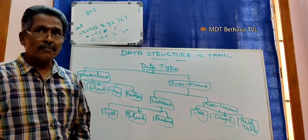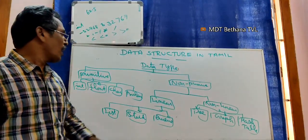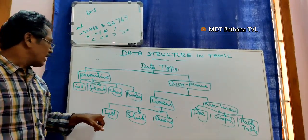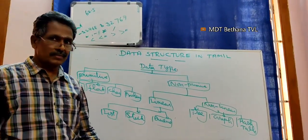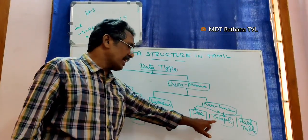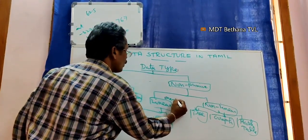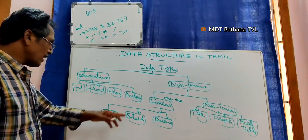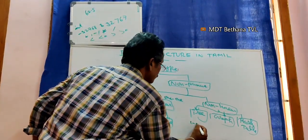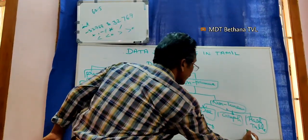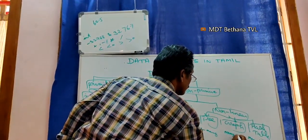Non-primitive data type — it is not built-in. It is a data structure. There are two types: linear and non-linear. Linear includes List, Stack, and Queue. Non-linear includes Tree and Graph. Linear has a one-to-one relationship. Tree has a one-to-many relationship. Graph has a many-to-many relationship.